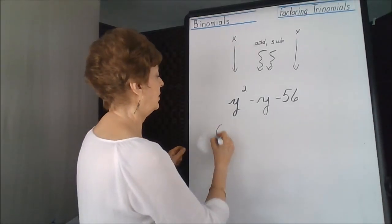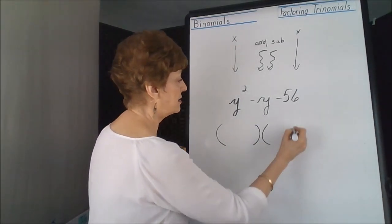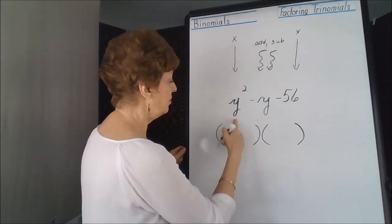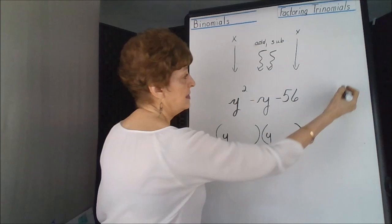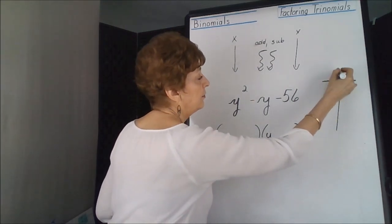Methodical thinking. We're going to pull our parentheses. Our first term we can use y in each position. Let's make a T-bar for 56.